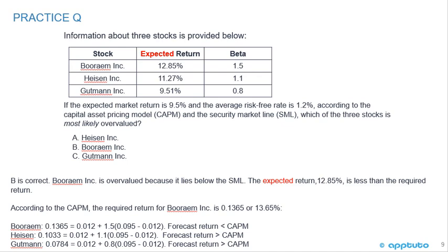For Heisen, the CAPM required return is 10.33%, which is less than the forecast return of 11.27%, so Heisen lies above the security market line and is undervalued. Similarly for Gutmann, the CAPM required return is 7.84%, which is below the forecast return of 9.51%, so Gutmann also lies above the security market line and is undervalued. That is the last slide for this LOS. Thank you.